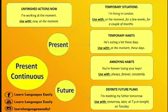We can use the present continuous with future time expressions to describe plans and arrangements in the future. We do not use the present simple because the present simple is not for specific actions. For definite future plans — for example: I am meeting my father tomorrow. Use with words like 'tomorrow,' 'later,' 'at 7pm,' 'tonight,' 'on Wednesday,' or 'on Tuesday.' It is a plan for what will happen in the future.